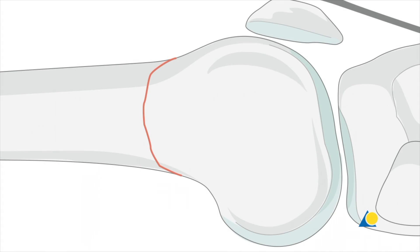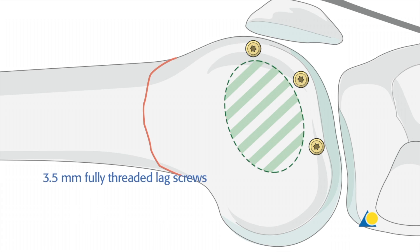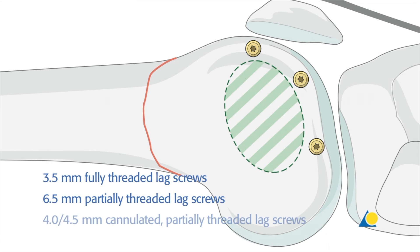To compress the joint block, two or three screws are placed from lateral to medial along the periphery of the articular surface. This leaves a free zone of bone for the placement of the plate. These screws may be 3.5mm fully threaded lag screws, 6.5mm partially threaded lag screws, or 4.0 to 4.5mm cannulated partially threaded lag screws.